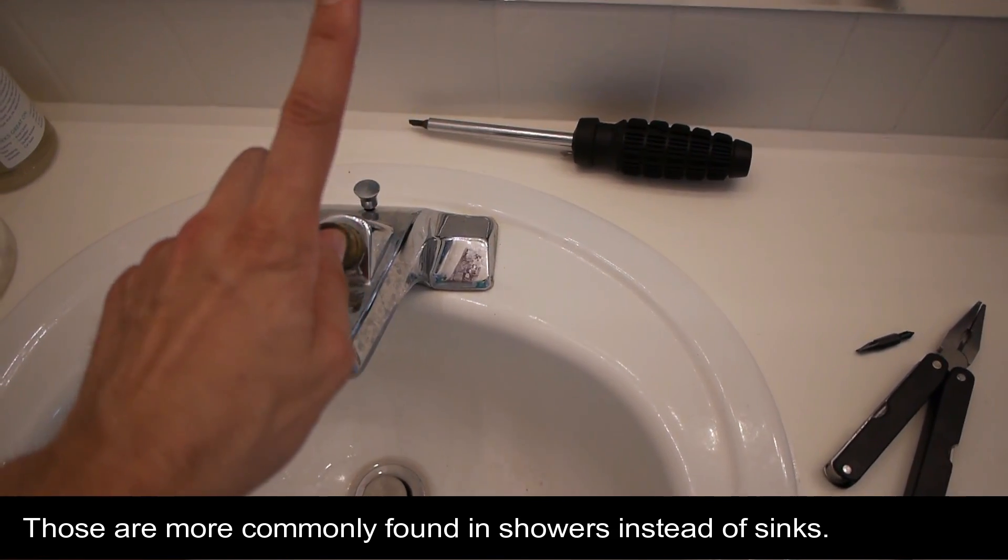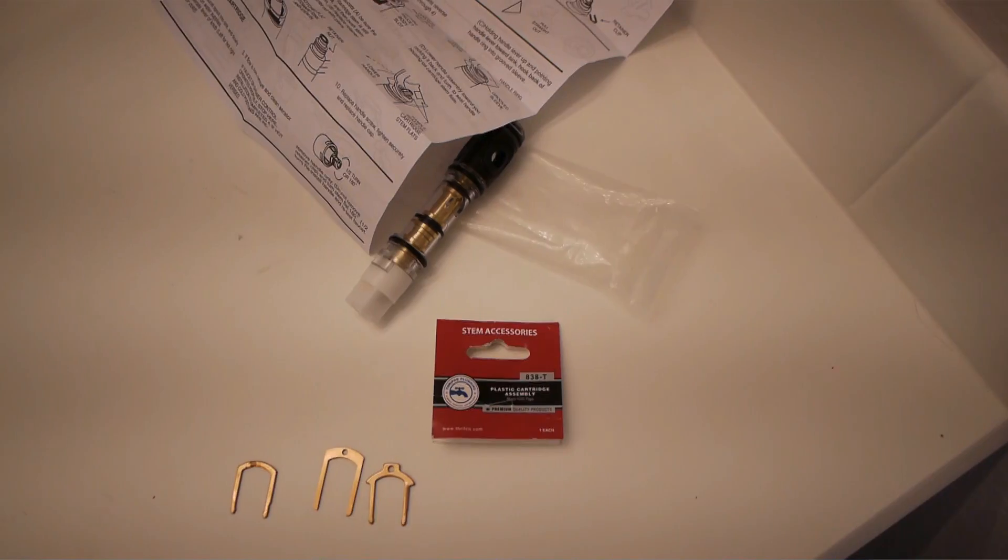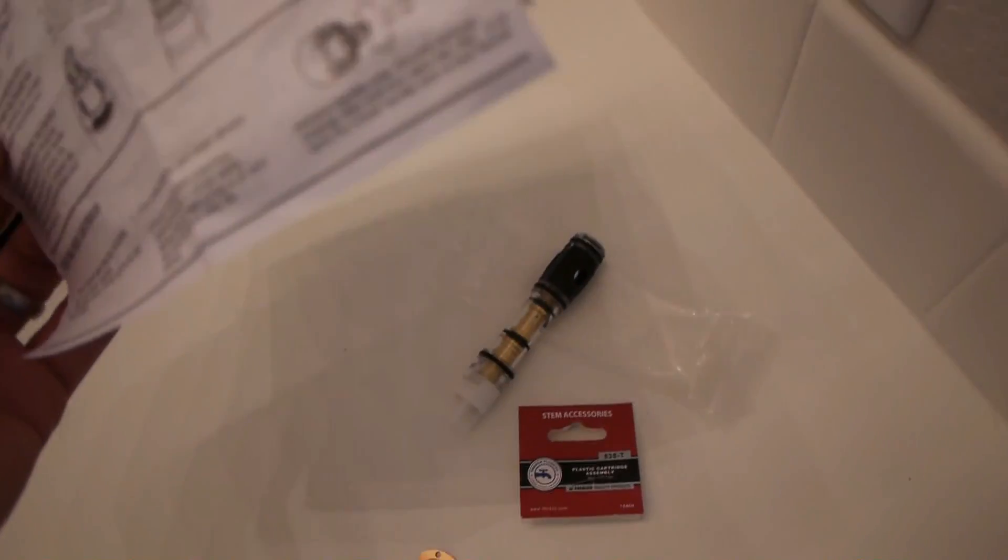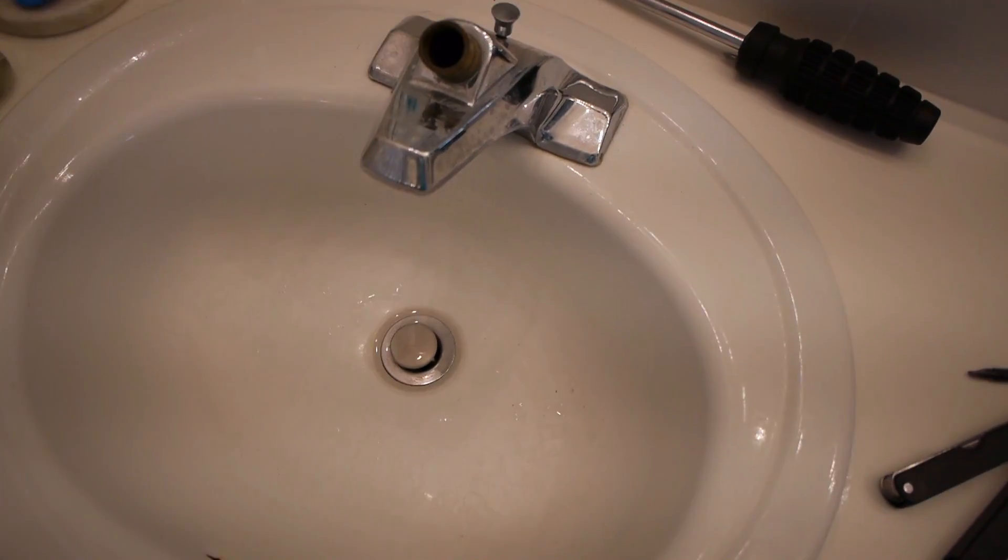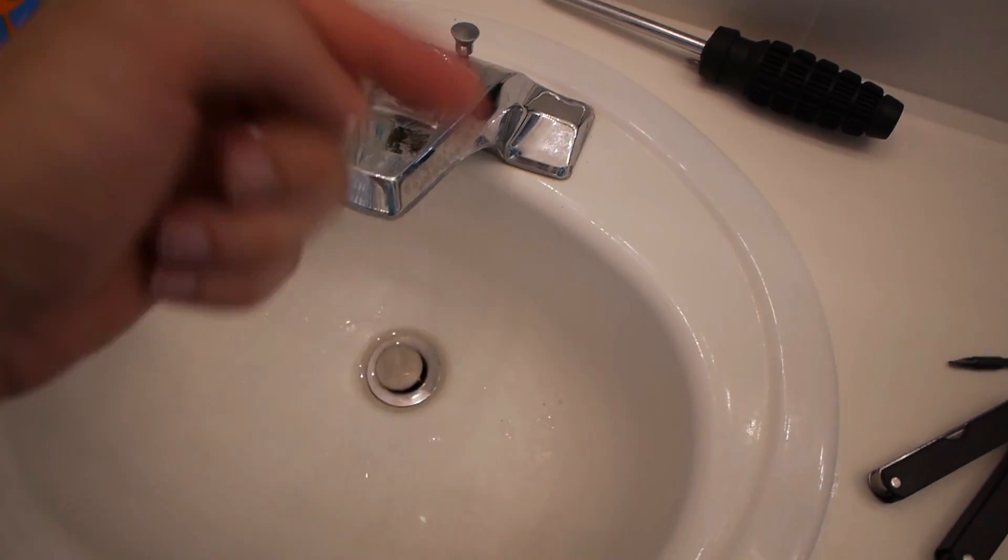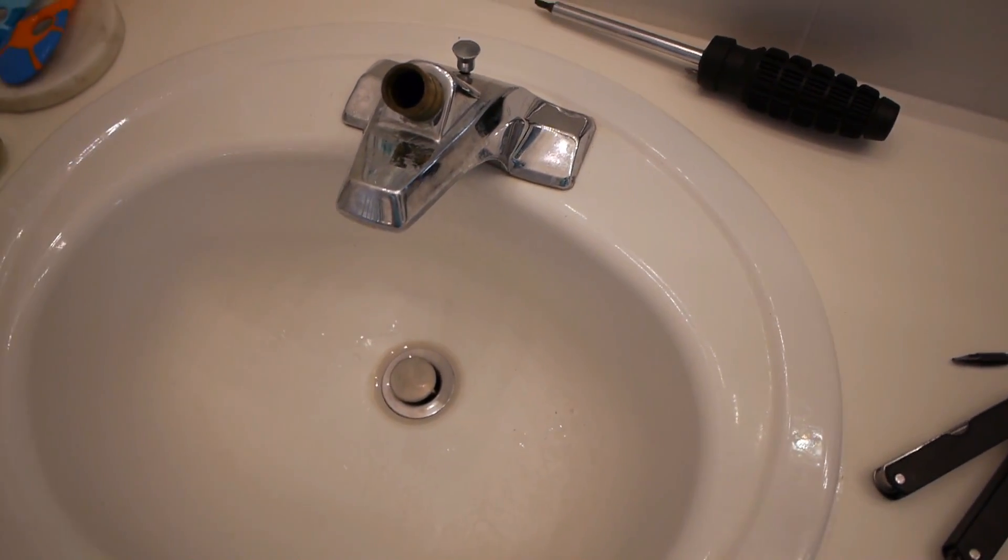The new cartridge comes with instructions on how to remove the old one as well as install the new one. Unfortunately, most of the time with older houses, you don't know what model you have and what model you need. You're kind of on your own to figure out how to remove the old one. Take it to the store, which is what I usually suggest doing.